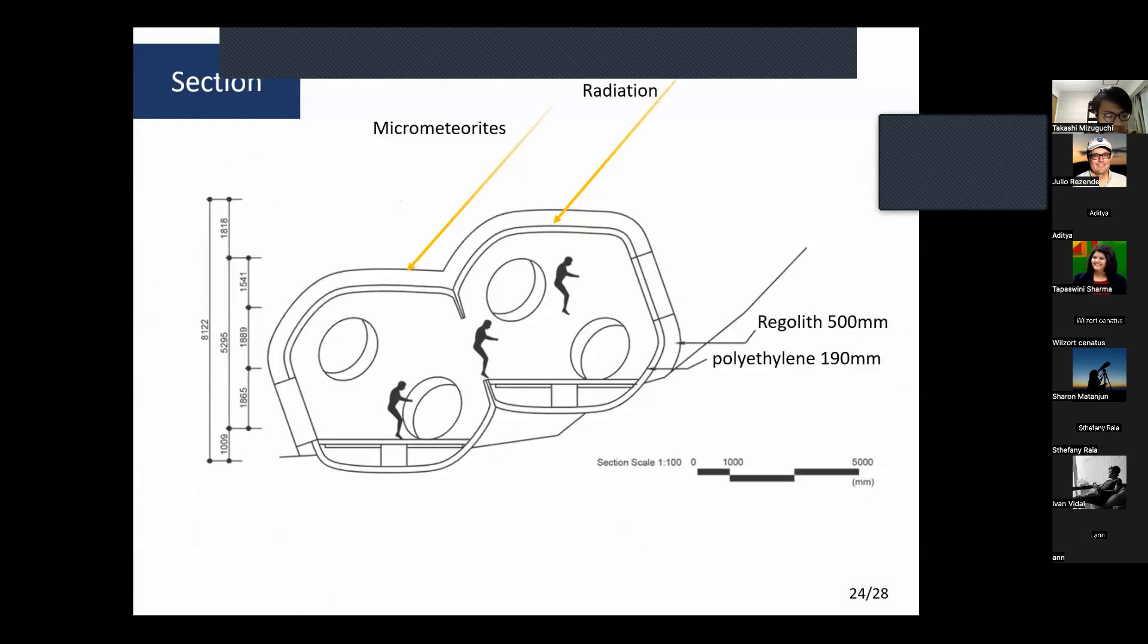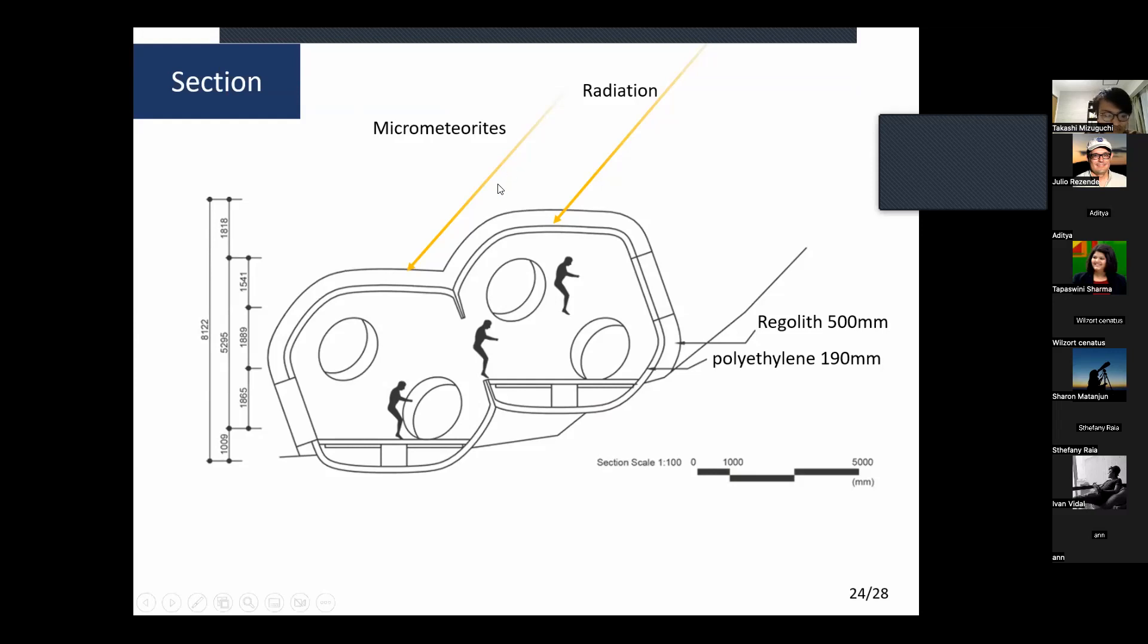This is a cross-section of the details. You can move between modules while jumping between them. In addition, regolith and a polyethylene shield protect those inside the interior from the environment, micrometeoroids, and radiation.